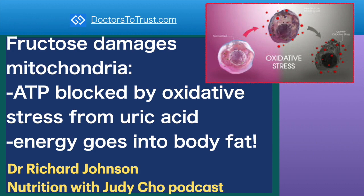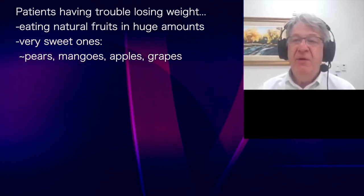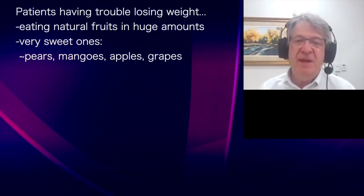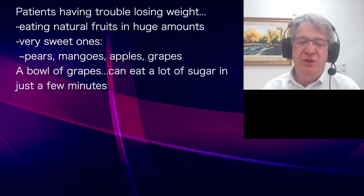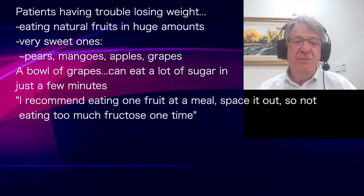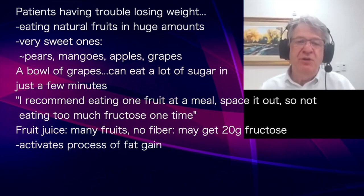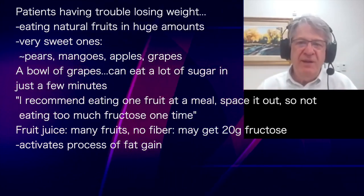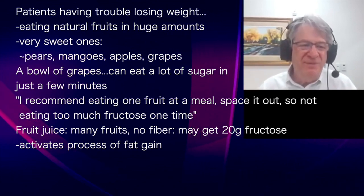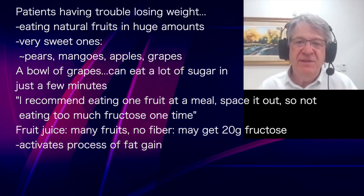I've had patients contact me who were having trouble losing weight while eating natural fruits — but eating huge amounts of very sweet fruits like mangoes, pears, apples, and grapes. These tend to be high in sugar. A bowl of grapes can deliver a lot of sugar in just a few minutes, so I would probably eat like one fruit at a meal and separate it out so you're not eating a huge amount of fructose all at once. Fruit juice is another problem: when you remove the fiber and juice multiple fruits, you can get 20 grams of fructose and drink it fast, which can really activate the fat-gain process.